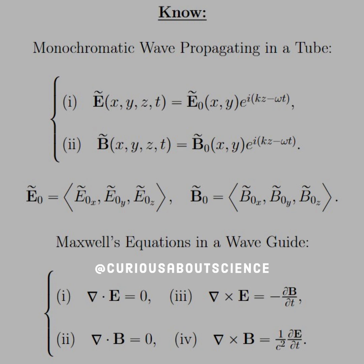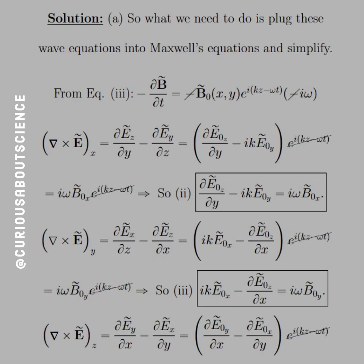For part A, we need to plug the wave solutions into Maxwell's equations and simplify. From equation three, if we take the time derivative we know what to expect, but now we need to find the curl components of everything. When finding the curls, we have partial derivatives — be very careful here.